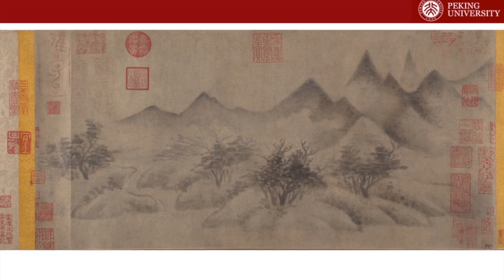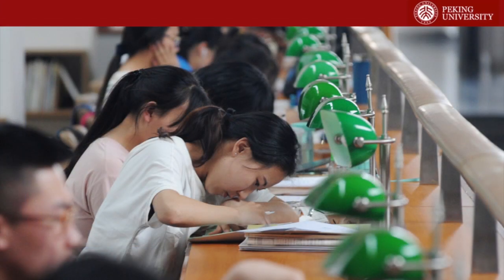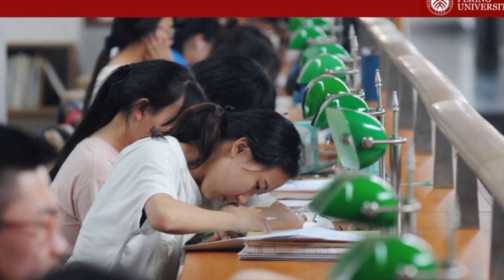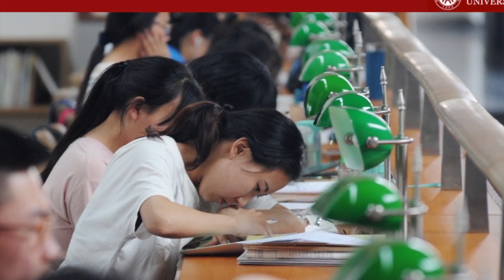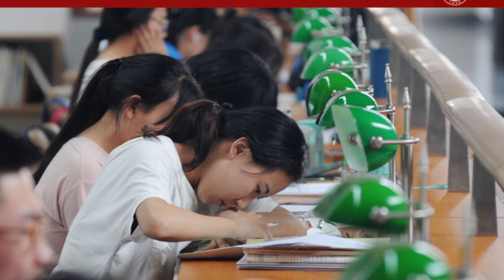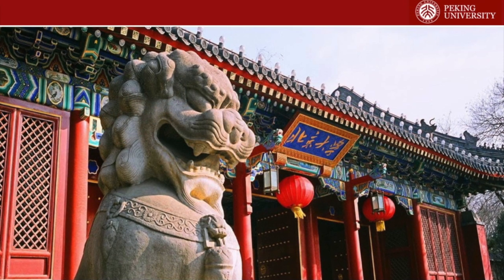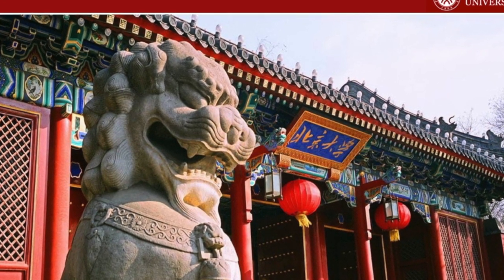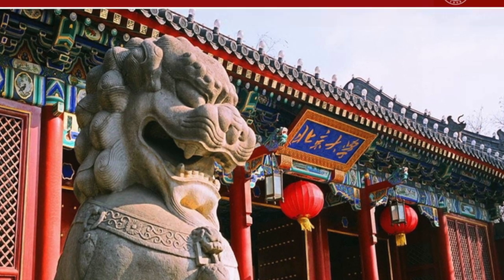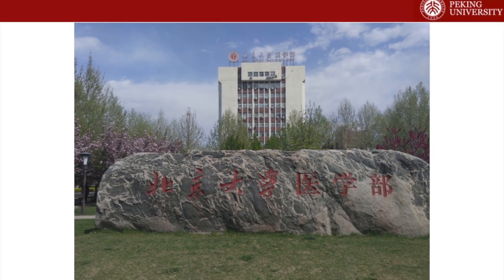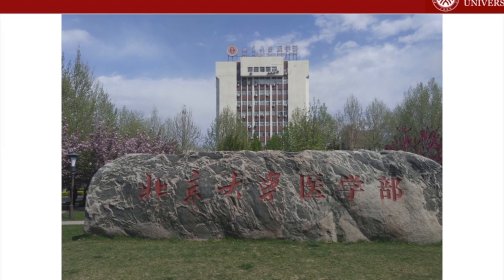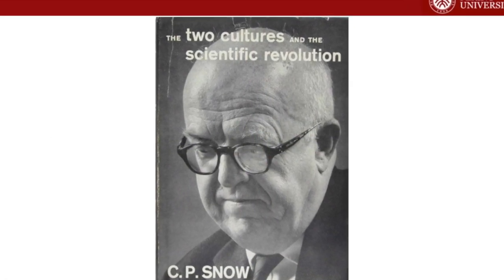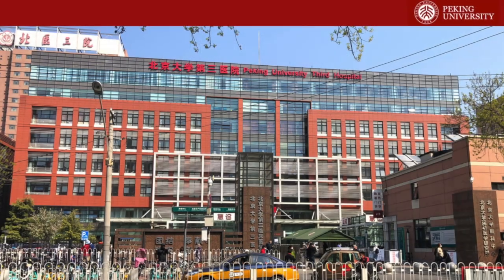Whereas the civil service examinations integrated both ethics and aesthetics, today the system is different. To take one example, we have the Gaokao system, which is about college entrance. What we see in this system is a divide between the arts and the sciences, or the humanities and the sciences. Students who want to get into top universities like Peking University typically focus on science subjects because they have higher grades. This divide is not unique to China — we see this in my home country of Australia. This divide between the sciences and the humanities was famously described by C.P. Snow as the two cultures, and it is particularly pronounced in the fields of medical education in China and abroad.